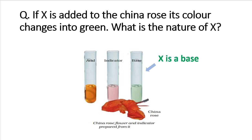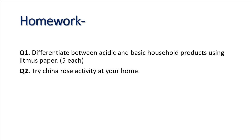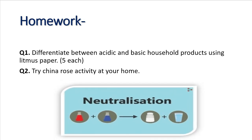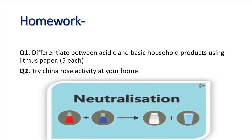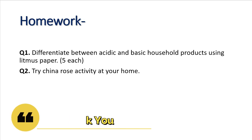Today's topic was very practical in nature, so I tried to explain through activities. If you still have any doubt, ask me in the comment section. For self-evaluation at home, take five household products and use litmus paper to check how each reacts. Based on the color change, you can classify them as acidic or basic products. In the next topic, we will learn what happens when we mix acidic and basic solutions. Thank you for watching — this is Ayush Agrawal signing off.